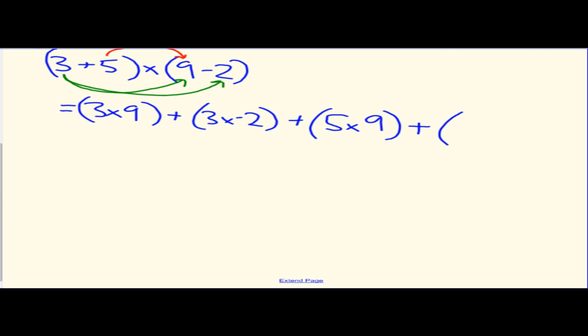3 plus 5 times 9 minus 2. According to our rainbows, our first number in the first bracket needs to be multiplied by the first number in the second bracket. So, we're going to have 3 times 9. Then, we need our number in the first bracket multiplied by the second number in the bracket. So, that is going to be plus 3 times negative 2. Next, we need to multiply the second number in the first bracket by the two numbers in the second. So, we're going to have 5 multiplied by the 9, that's going to give us 5 times 9 plus that number again, the 5 multiplied by the last number over there. That gives us 5 times negative 2.